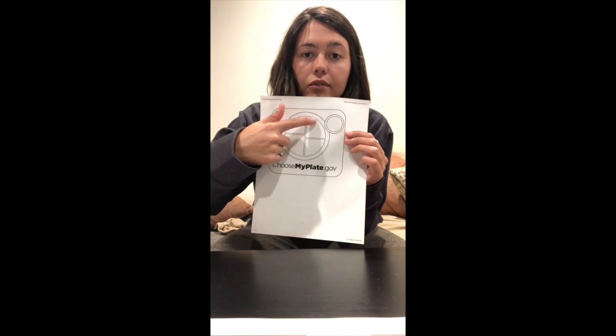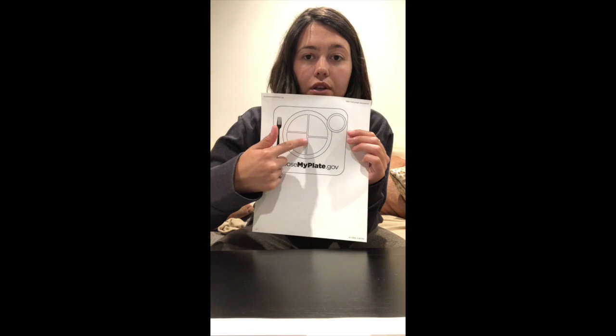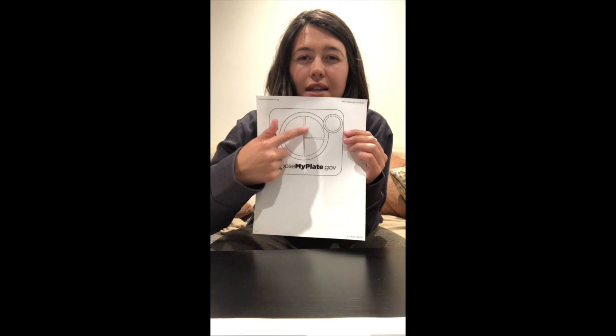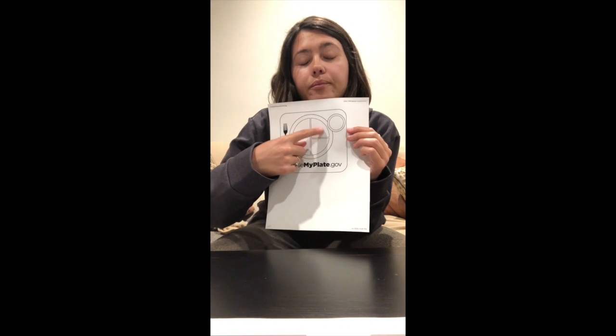And then we have this big section at the top over here. See how it's longer than this one? This one's shorter up here. So this one is for grains. So that's like bread, crackers, anything like that. We can put that here.